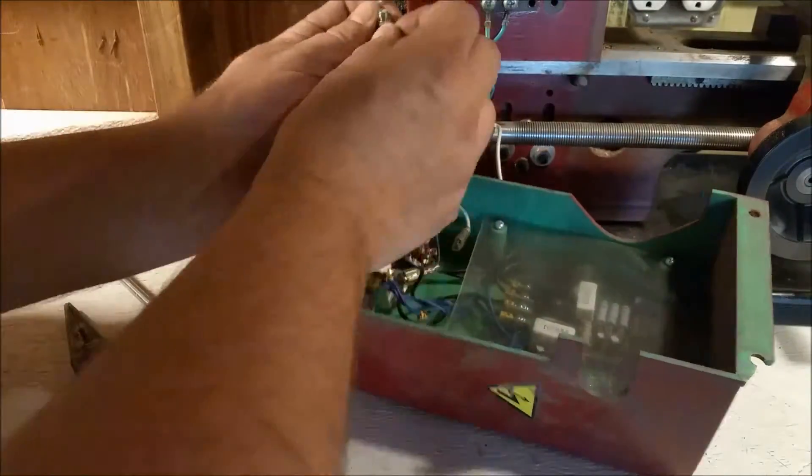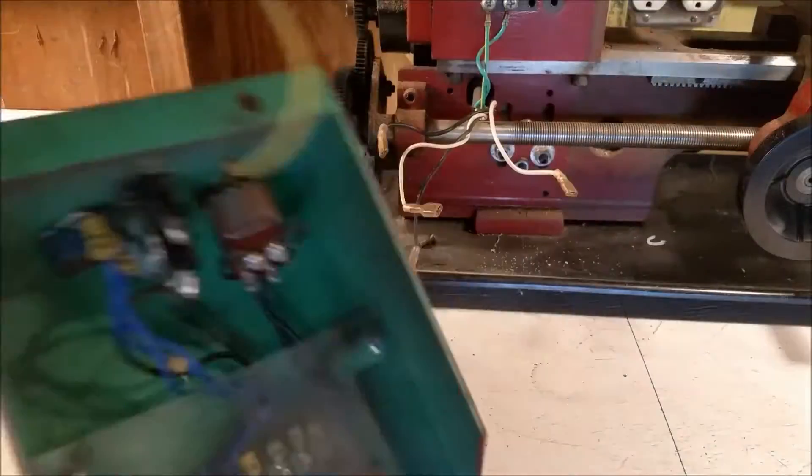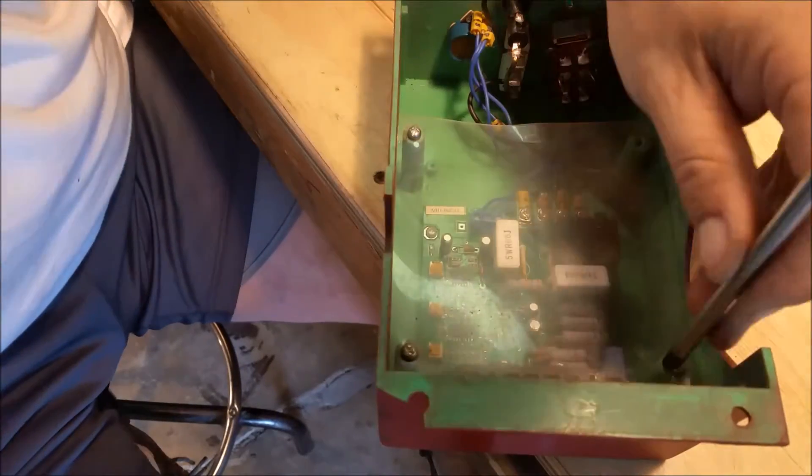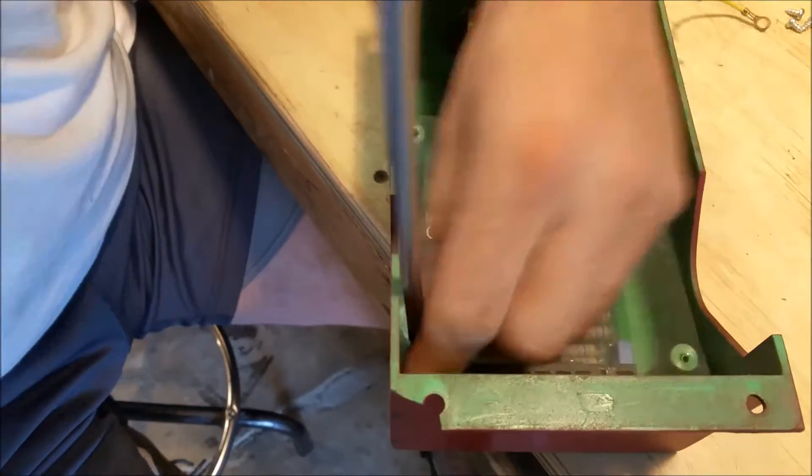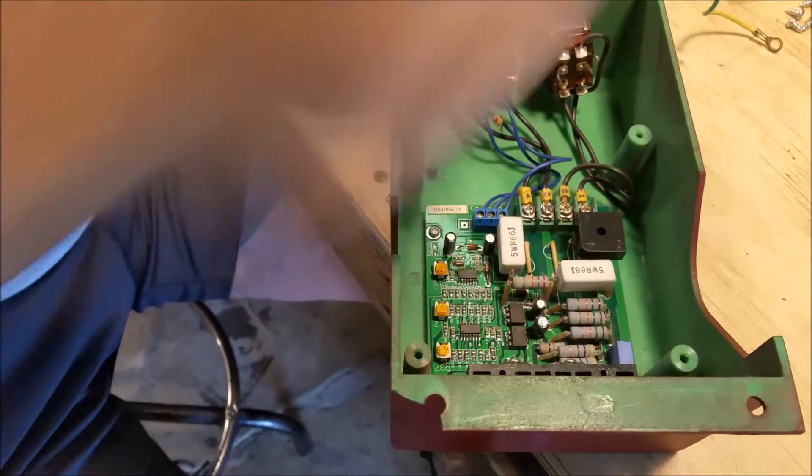Let's go ahead and remove the ground strap and now we've got the control panel successfully separated from the lathe. There's this plastic cover I'm going to remove. It's supposed to keep all your filings and shavings out of the electronics.